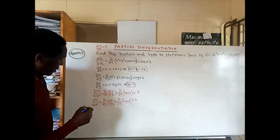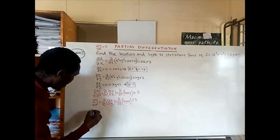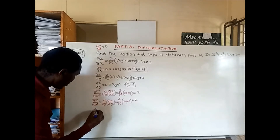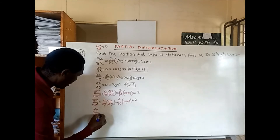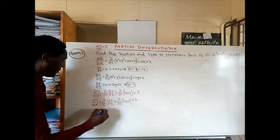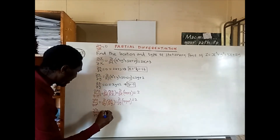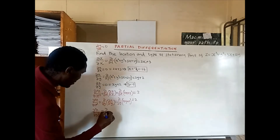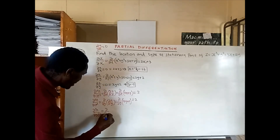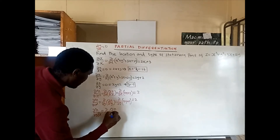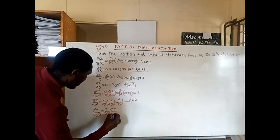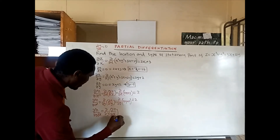Now we are going to get the mixed second partial derivative of z — first with respect to x and then with respect to y. This is the partial derivative with respect to y of the partial derivative of z with respect to x.